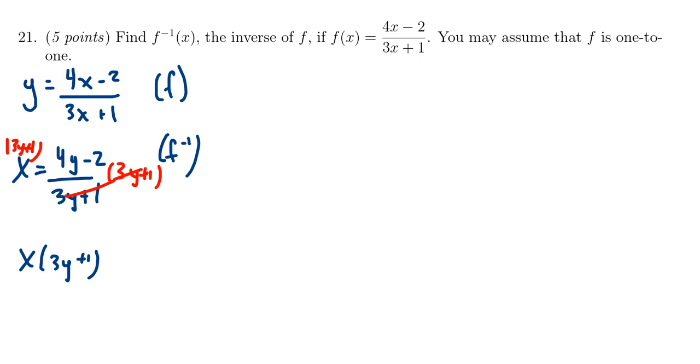Giving us x times 3y plus 1. I actually want to distribute this, so we end up with 3xy plus x. This on the right-hand side would then be equal to 4y minus 2.